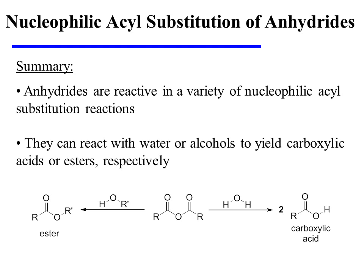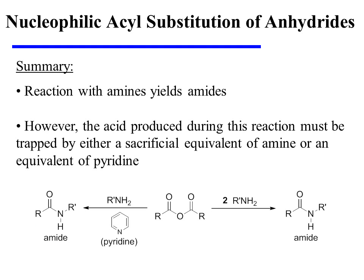In summary, anhydrides are reactive in a variety of nucleophilic acyl substitution reactions. They can react with water to yield carboxylic acids, or they can react with alcohols to yield esters. On the other hand, the reaction of anhydrides with amines yields amides. However, the acid produced during this process must be trapped by either a second sacrificial equivalent of the amine or by an equivalent of a non-nucleophilic base such as pyridine.